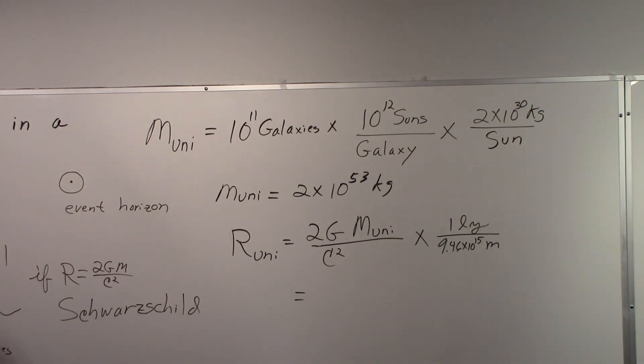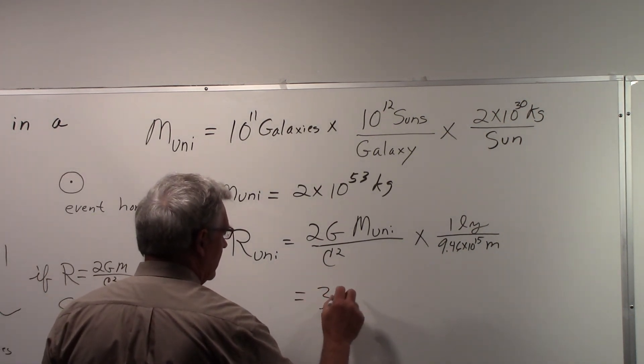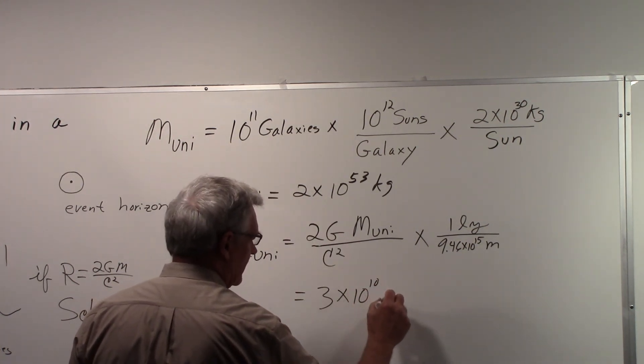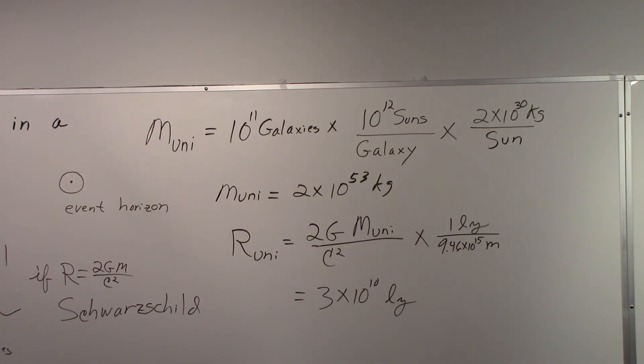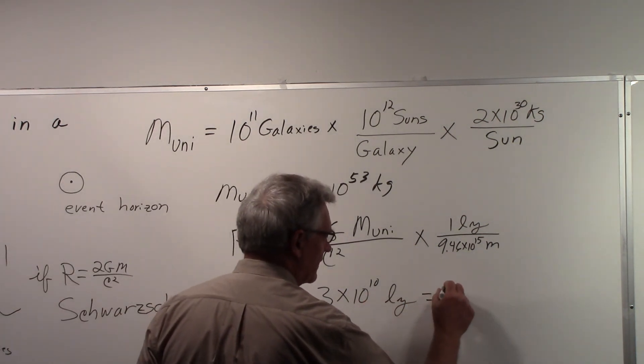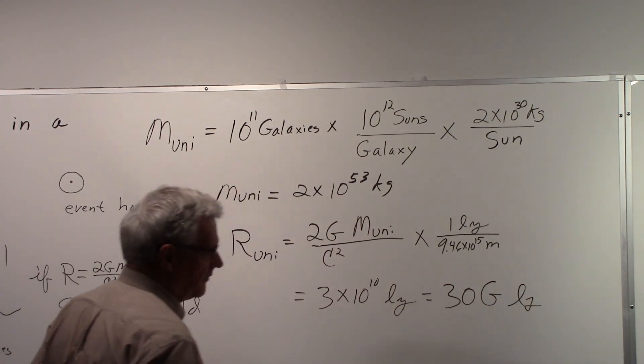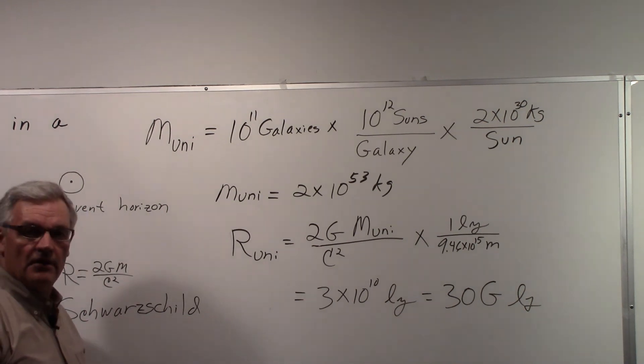So we're going to get the radius now. If we do that, we're going to get the radius in light years, and if we work that out, we get approximately 3 times 10 to the 10th light years. So that's 30 billion light years, or 30 giga light years.